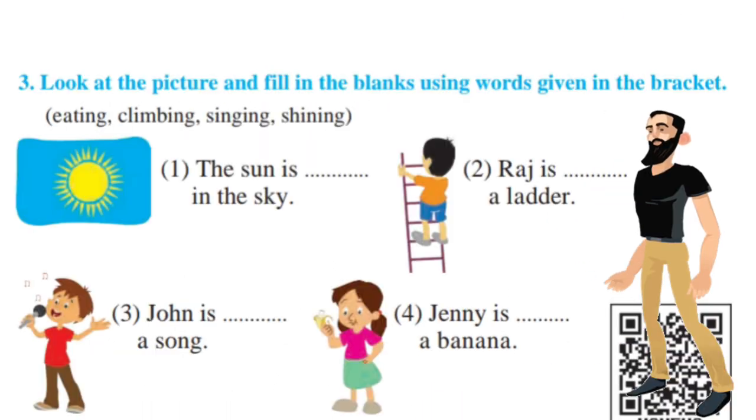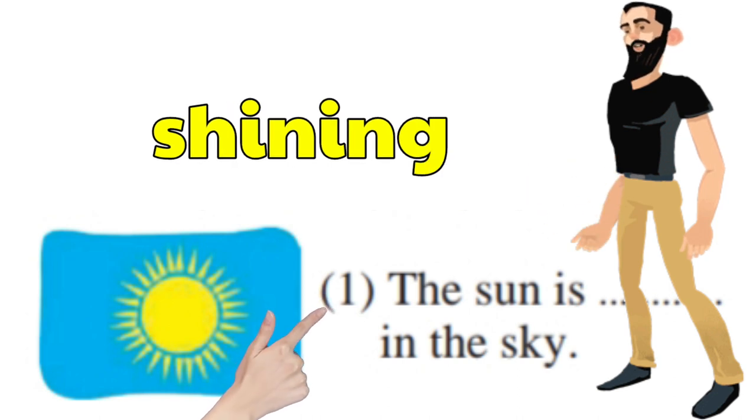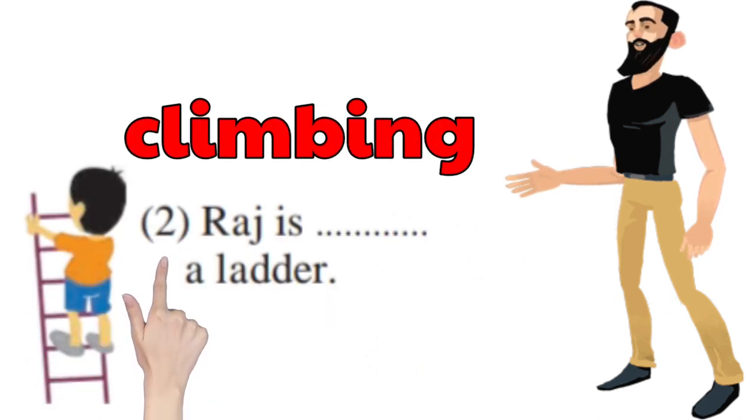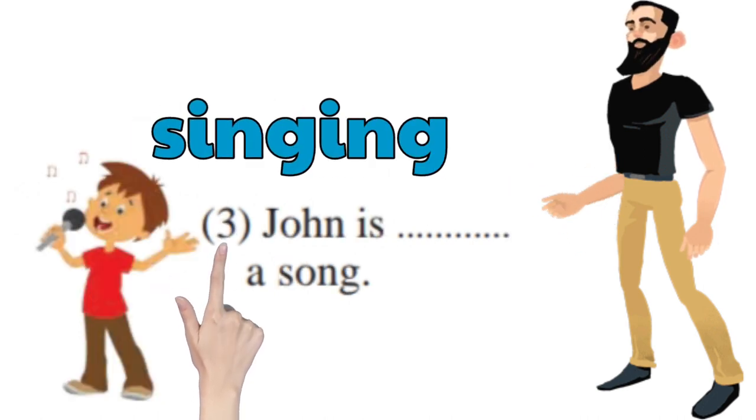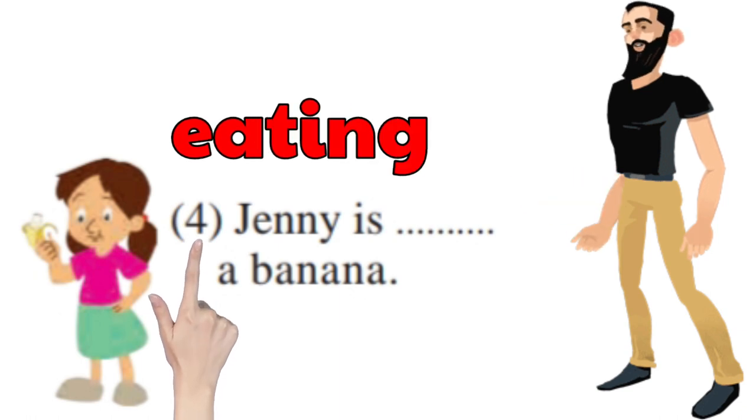Look at the pictures and fill in the blanks using words given in the bracket. The sun is shining in the sky. Raj is climbing a ladder. John is singing a song. Jenny is eating a banana.